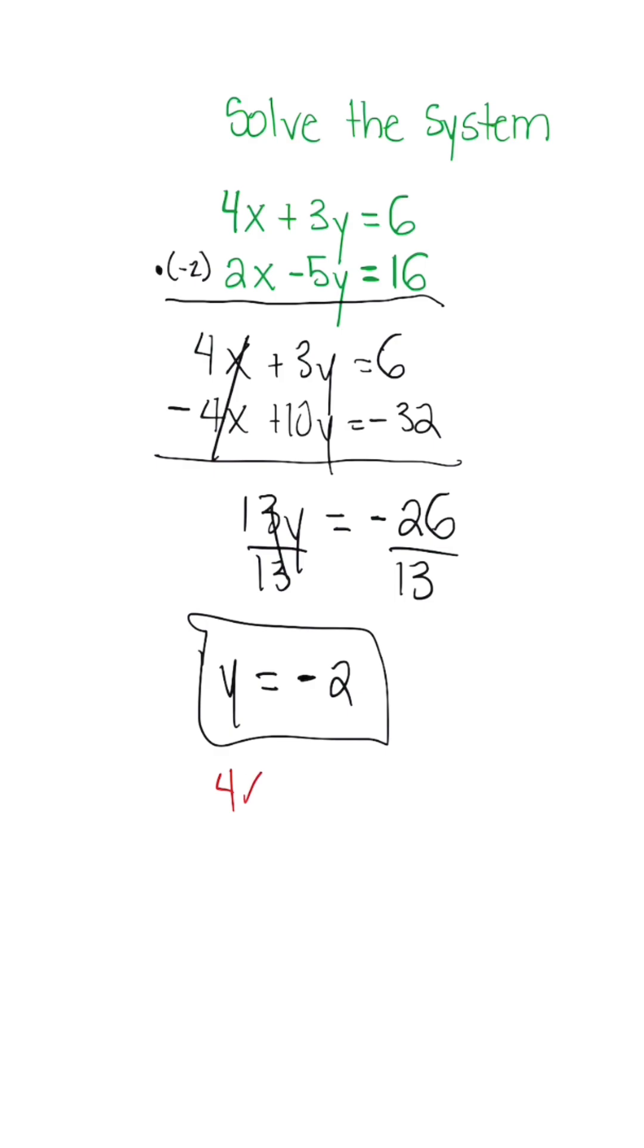So we have 4x plus 3 times negative 2 is equal to 6. So 4x minus 6 is equal to 6. When we add 6 on both sides, we'll have 4x is equal to 12. And after we divide, we're going to get x is equal to positive 3.